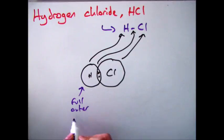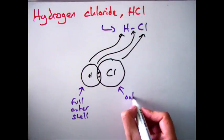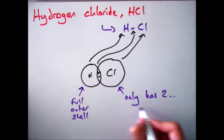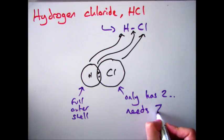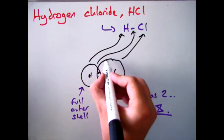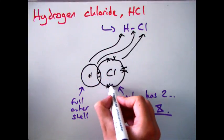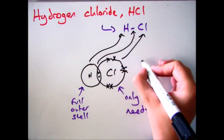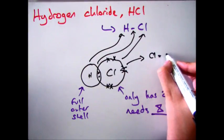You can see that hydrogen has a full outer shell of two, but the issue is that chlorine does not. Chlorine is in group 7, so it should have 7 electrons in the outer shell, but at the moment it's only got two. So what you need to do is fill that up and make it 8. We've got two in the shared area, so put another six on, and then it's got its full outer shell of eight. That is our complete electronic configuration for HCl.